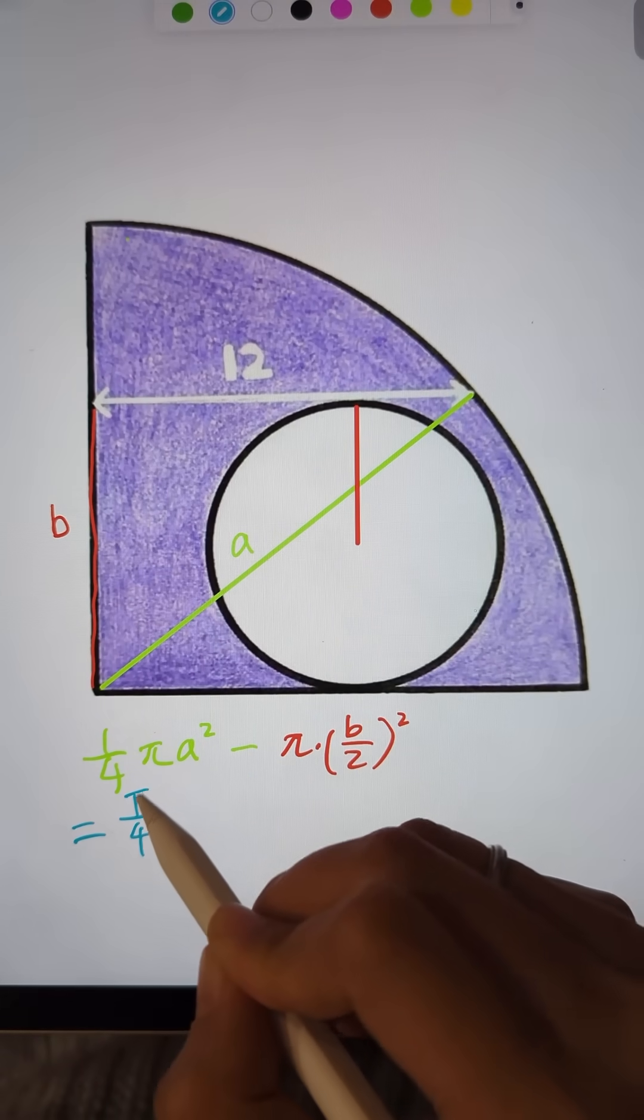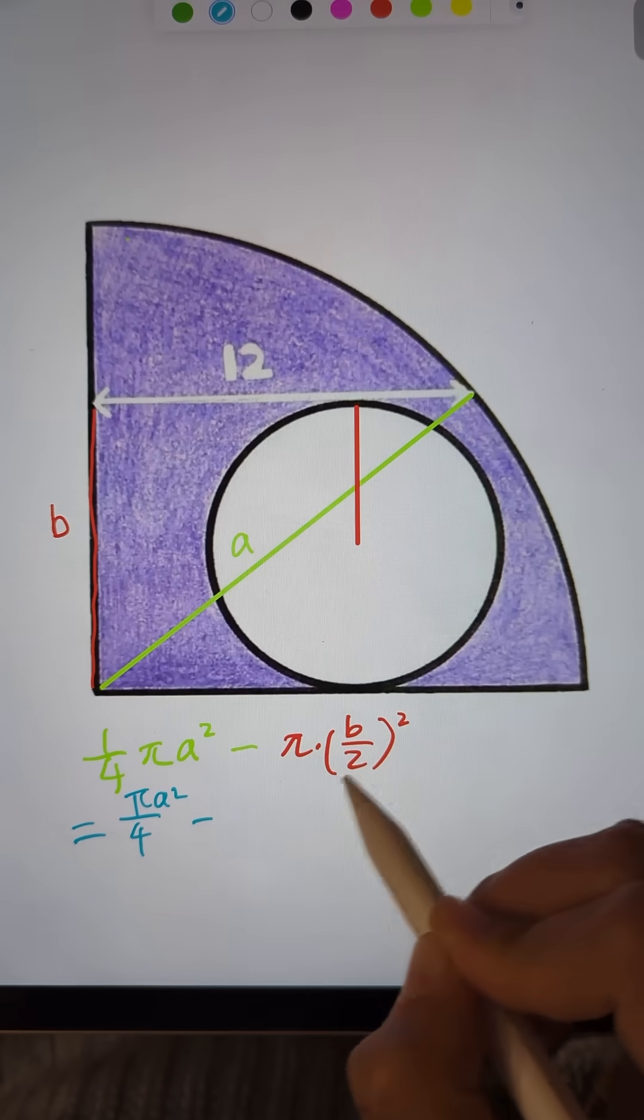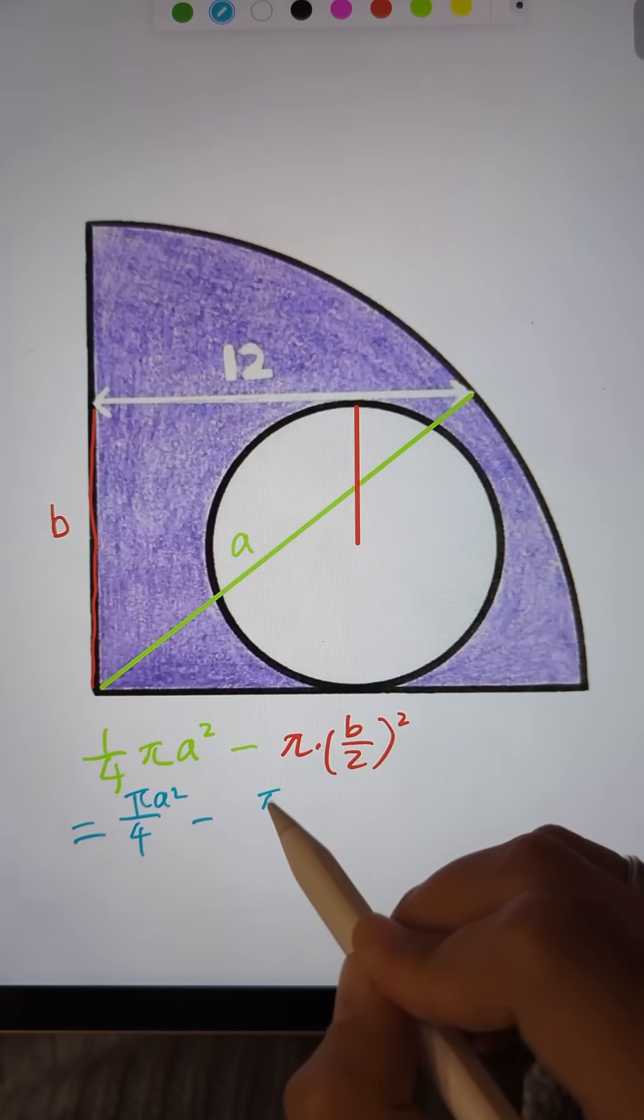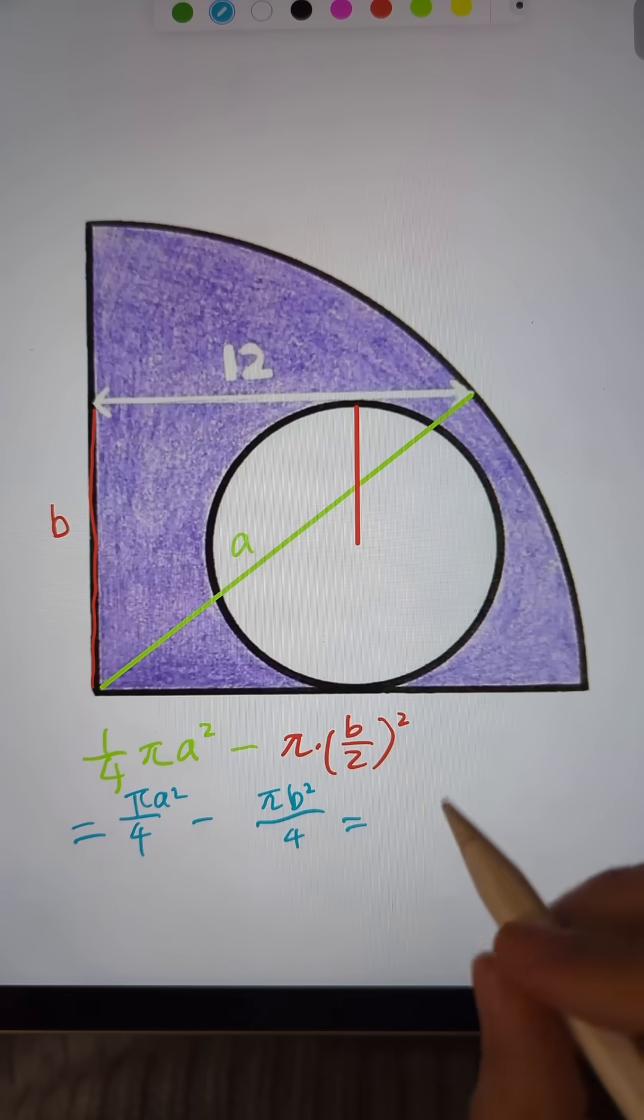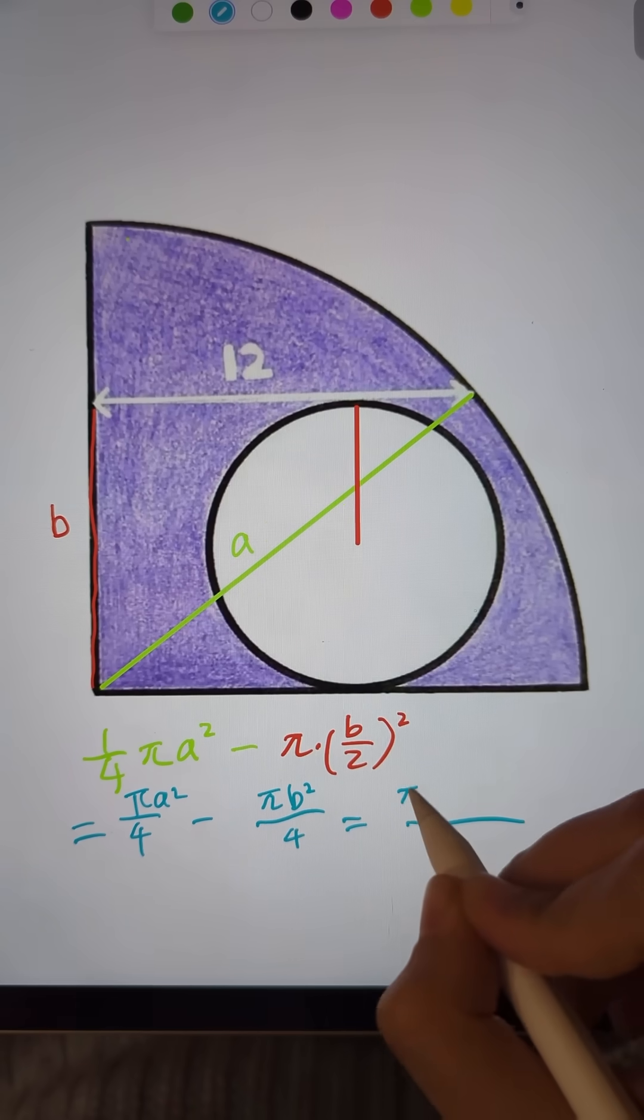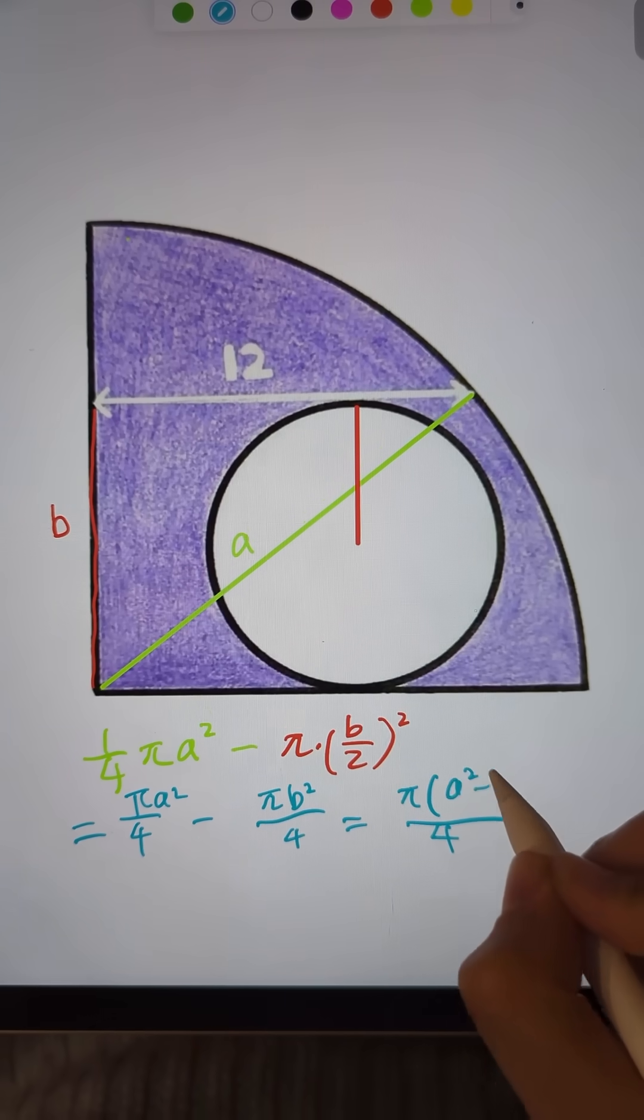So it's one-fourth pi a squared minus one-fourth pi b squared. And we keep simplifying: it's pi over 4 times (a squared minus b squared).